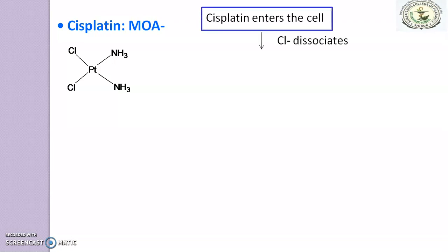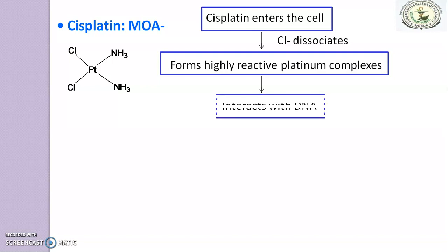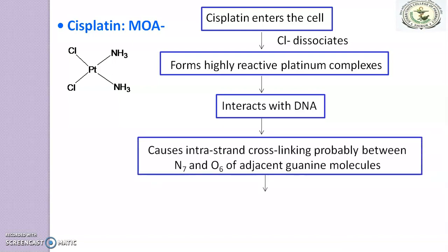Let's move with the Mechanism of Action of Cisplatin. Firstly, the structure of Cisplatin. Cisplatin comes under the miscellaneous class of Anti-Neoplastic agents. Cisplatin enters the cell and after entering, it dissociates the chloride ions. Due to that, it forms a highly reactive Platinum complex, and this reactive Platinum complex interacts with DNA.